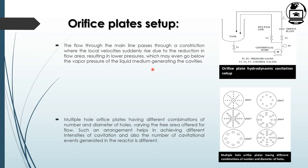The orifice plate constriction can be a venturi or an orifice plate having multiple or single holes. Multiple orifice plates have different combinations and numbers of diameters that vary the free area for flow. Such arrangements help in achieving different intensities of cavitation, and the number of cavitational events generated in the reactor also varies.